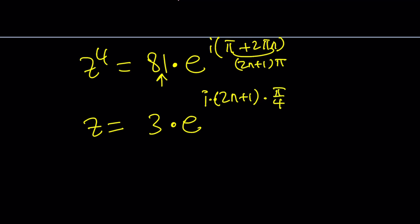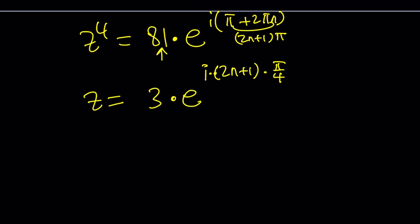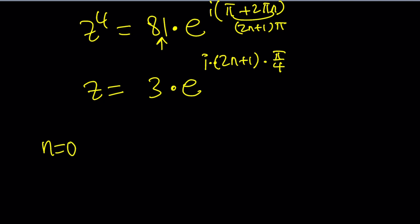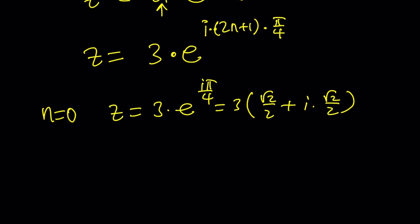So it's going to look like this. You're going to have i times 2n plus 1 times pi over 4. You can go ahead and replace n with 0. That's going to give you z equals 3 times e to the power i pi over 4. That's going to be 3 times cosine pi over 4, which is root 2 over 2 plus i times root 2 over 2. And you can distribute that and get the final answer.